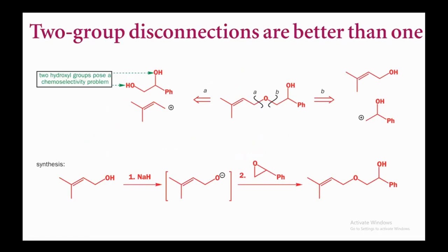Two-group disconnections are better than one. Given a molecule, you can disconnect via route A or route B. Route A gives a 1,2-functionalized diol and a positive charge; route B gives an alcohol and an epoxide. The epoxide is the synthone equivalent because the oxygen lone pair can attack the carbon to form the epoxide. React the alcohol with a base like sodium hydride to generate a negative charge on oxygen, which attacks the epoxide ring; ring opening gives the alcohol. This illustrates two-group disconnections: one group was an ether and one was an alcohol.